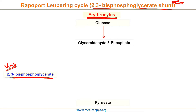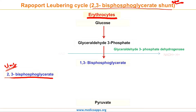Let us now look at the various reactions involved in this cycle. As the first step, glucose is converted into glyceraldehyde 3-phosphate. Then as the next step, glyceraldehyde 3-phosphate is converted into 1,3-bisphosphoglycerate. This reaction is catalyzed by dehydrogenase and there is an associated conversion of NAD to NADH + H. Also from this step there are two further pathways: one leads to the formation of 2,3-bisphosphoglycerate, while the other directly proceeds to the formation of pyruvate via 3-phosphoglycerate.